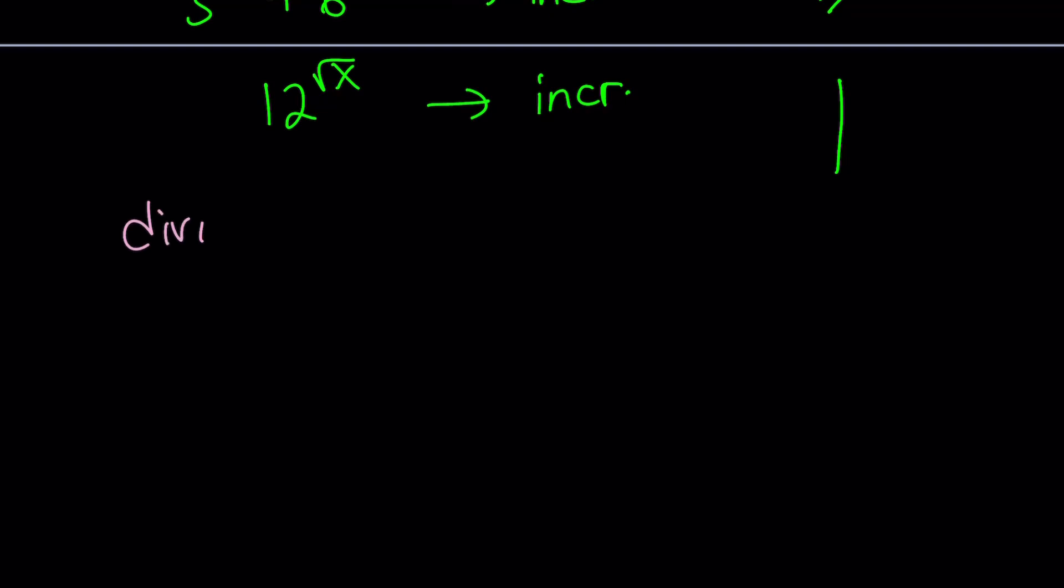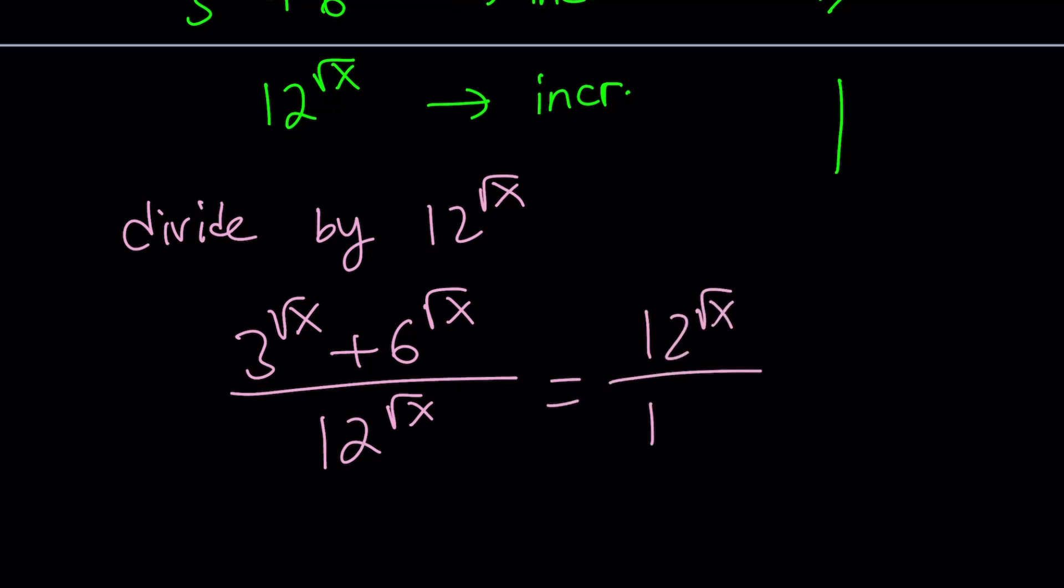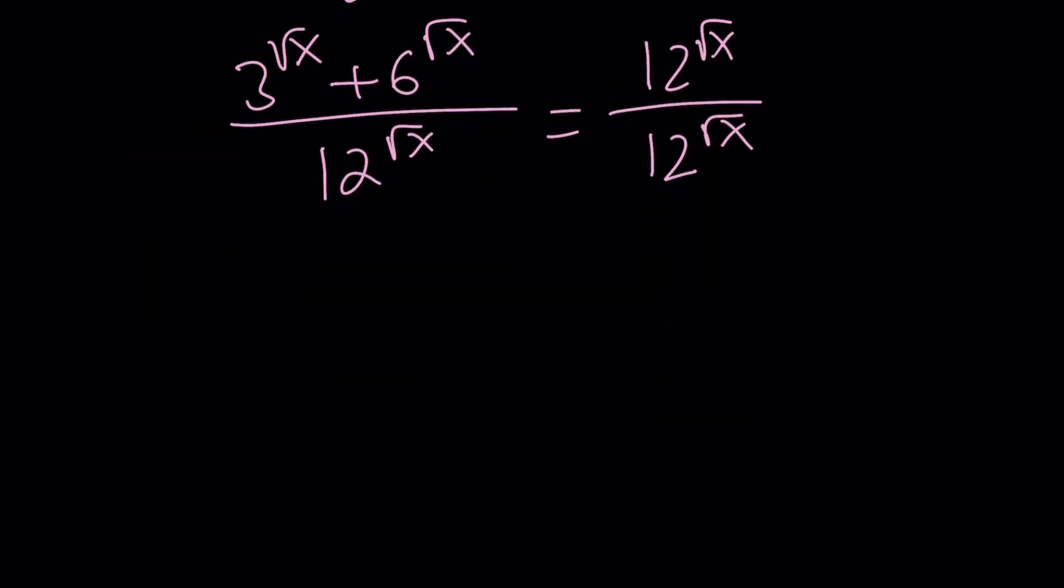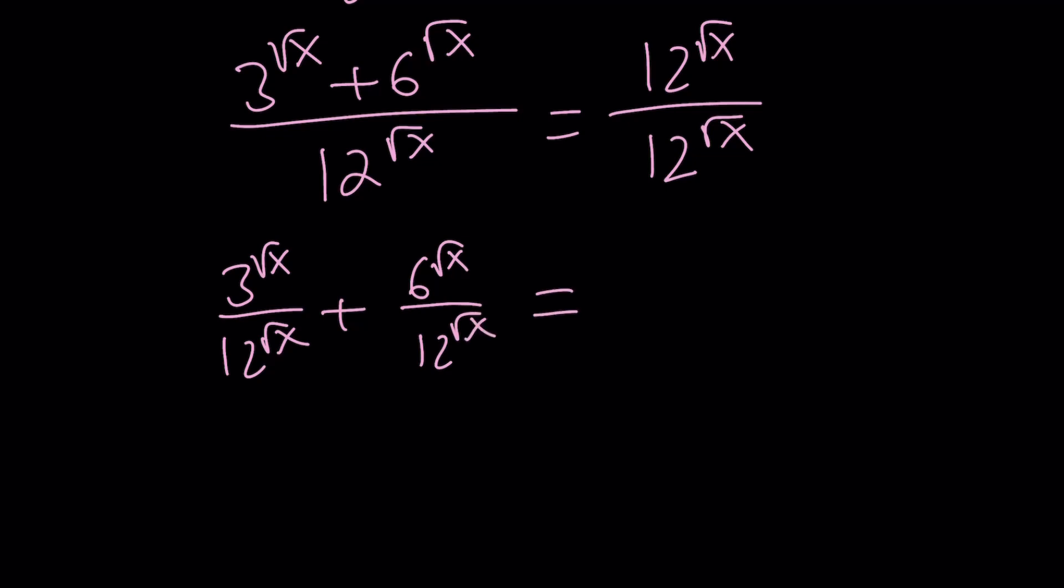Let's go ahead and divide both sides by 12 to the power square root of x, because it's the largest base. Take the left hand side, divide by 12 to the power square root of x. Take the right hand side, divide by 12 to the power square root of x. What do you get on the left hand side? You get a sum. So we can split it up. And then on the right hand side we're getting one.